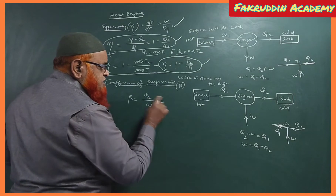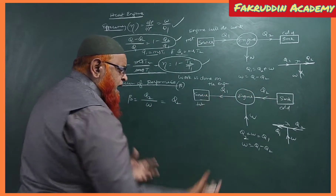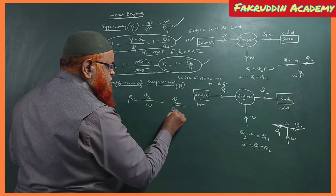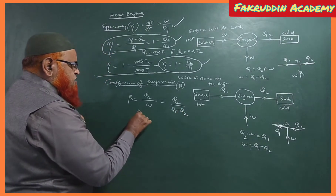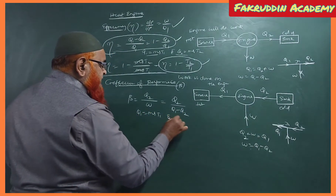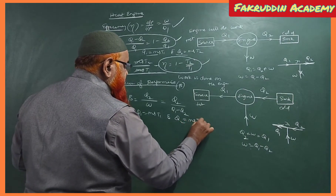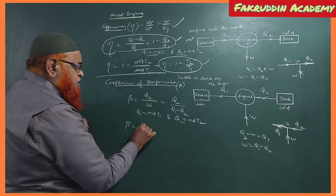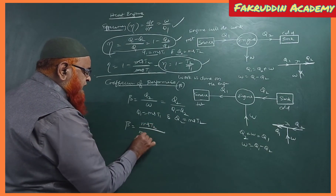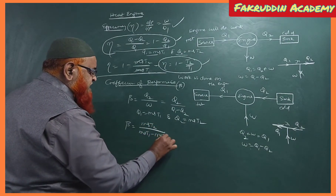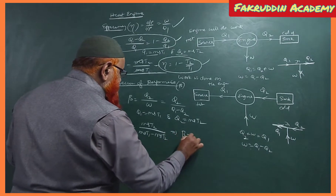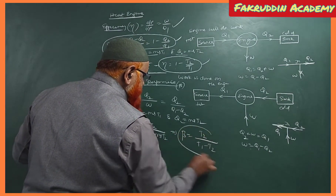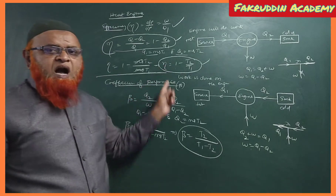Q2 is the heat energy absorbed by the refrigerator and W = Q1 − Q2 is the work done on it. The coefficient of performance β = Q2 / W = Q2 / (Q1 − Q2). Substituting Q1 = msT1 and Q2 = msT2, we get β = msT2 / (msT1 − msT2), which simplifies to β = T2 / (T1 − T2).